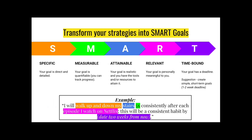Let's look at an example and understand how and why this is considered a SMART goal. If I wanted to reduce my sedentary time, I can make a SMART goal as such: I will walk up and down my stairs five times consistently after each episode I watch on Netflix. The 'walk up and down my stairs' is telling you exactly what I'm going to do — that's Specific. The stairs also make this Attainable because I have stairs in my home, so I have the resources to achieve this.